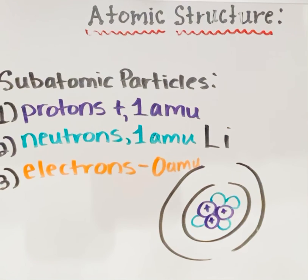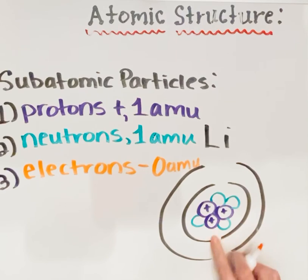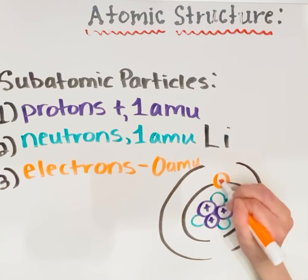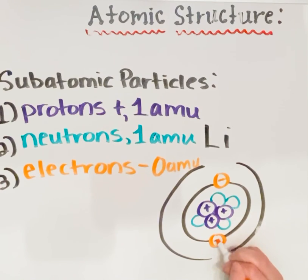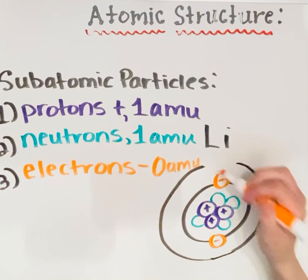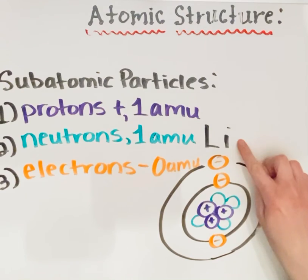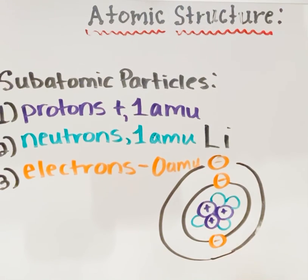Protons and neutrons can be found in the nucleus of the atom, while electrons are found on the outside. I'll draw my three electrons — one lithium atom has three electrons — on the outside of the nucleus. There is a very specific reason why I have two rings and why I've drawn a certain number of electrons on each ring, and I'll review that with you in next week's lecture. So one atom of lithium has three protons, three electrons, and four neutrons.